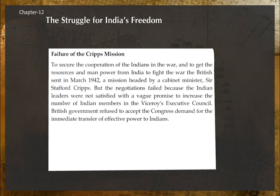Failure of the Cripps Mission: To secure Indian cooperation and resources for the war, the British sent a mission in March 1942, headed by cabinet minister Sir Stafford Cripps. But negotiations failed because Indian leaders were not satisfied with the offer — the British only promised to increase the number of Indian members in the Viceroy's Executive Council and refused to accept the Congress demand for the immediate transfer of effective power to Indians.